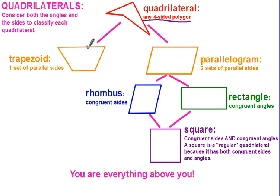The first thing you want to look at is the sides to see if any of them are parallel. If only one is parallel, then we call it a trapezoid. If you have two sets of parallel sides, we call it a parallelogram.